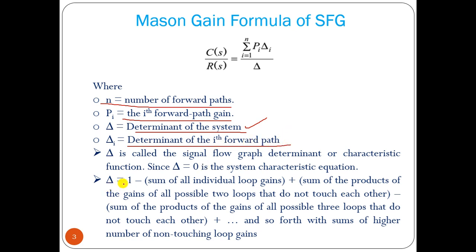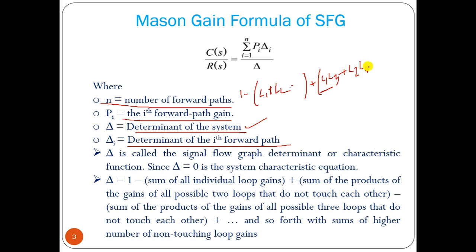Delta_i is the determinant of the i-th forward path. Delta is calculated as: 1 minus individual loop gain, plus product of 2 non-touching loop gains, then minus product of 3 non-touching loop gains, then plus product of 4 non-touching loop gains, and so on.